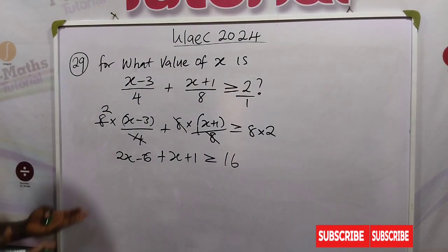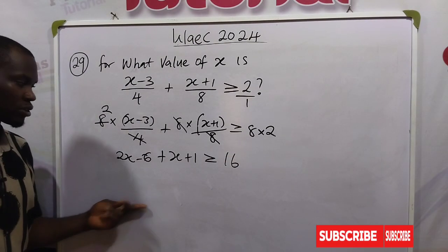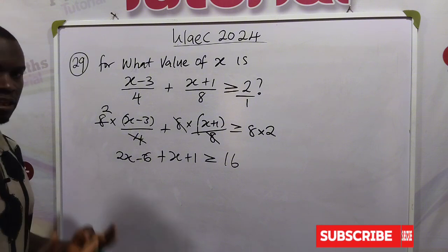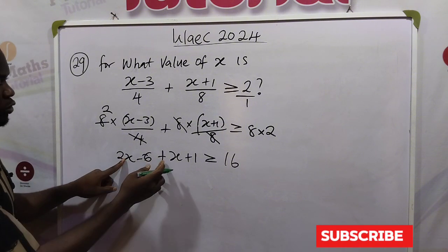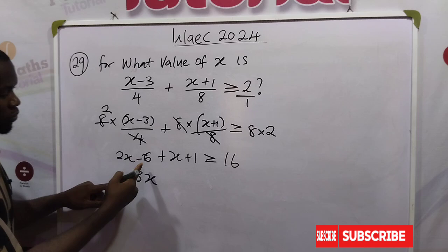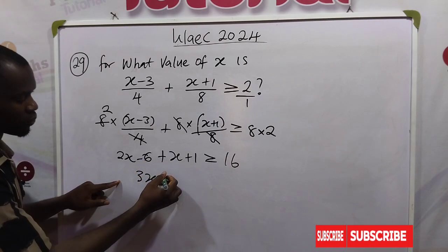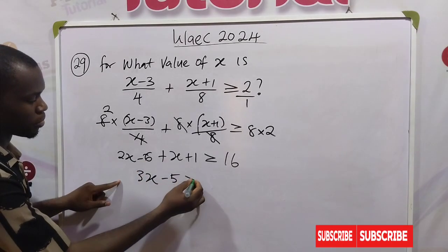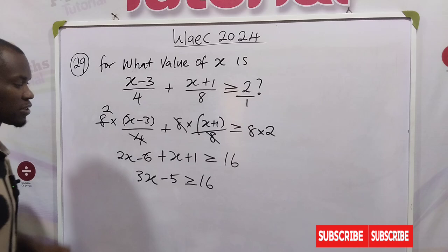Now we have a non-fractional linear equation. So let's operate the like terms. 2x plus x will give us 3x, minus 6 plus 1 will give us minus 5, greater than or equal to 16.